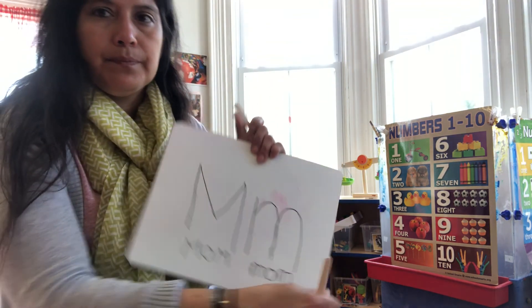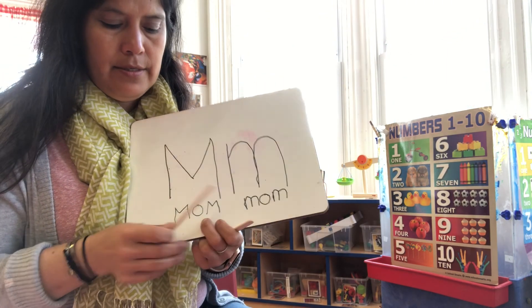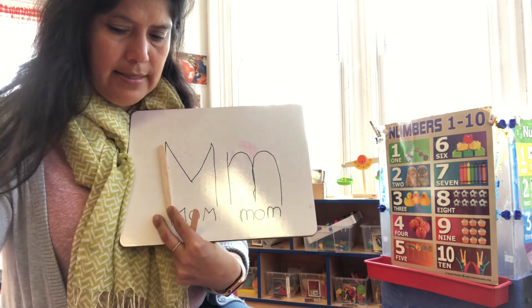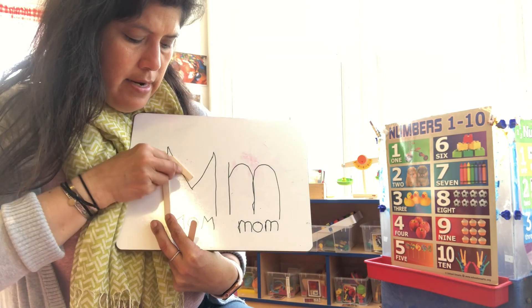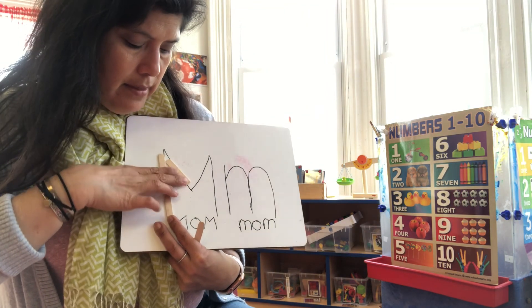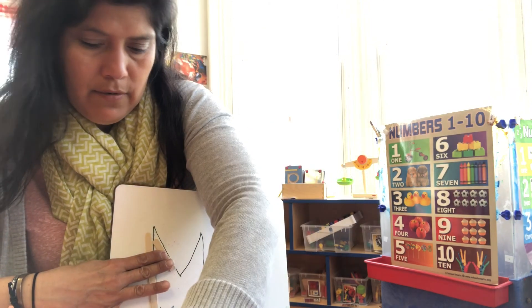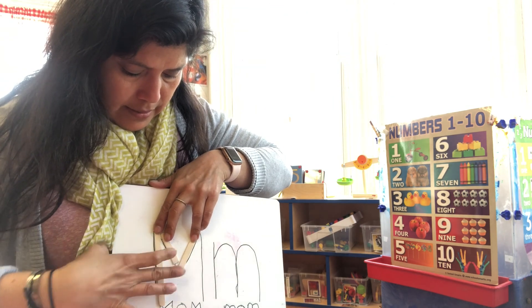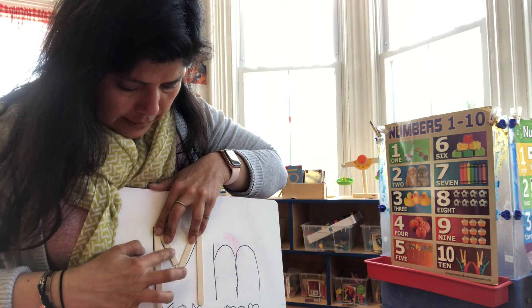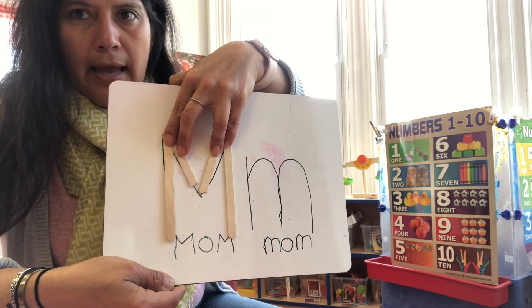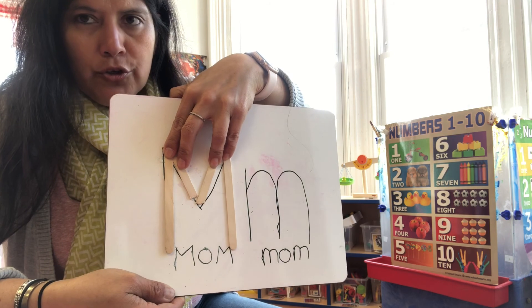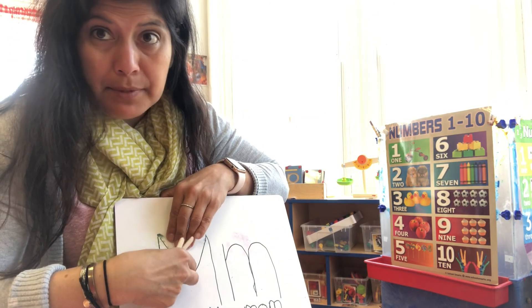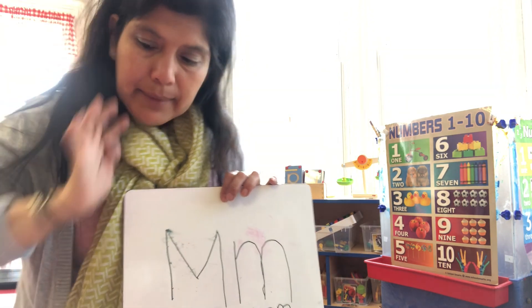I have some sticks right here. You can make the letter M with sticks — one stick, and then another stick. Let me show you: we have another stick, and I'm going to put my fingers on it so you can see the M better. Look at that — I just made the uppercase M with sticks! You can do that with any kind of sticks: popsicle sticks, sticks from outside, branches, little tiny sticks. You can make M's with many different things.